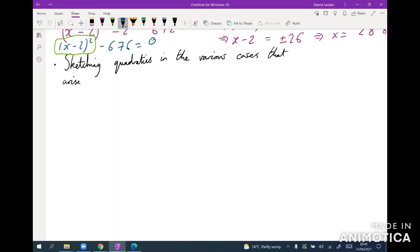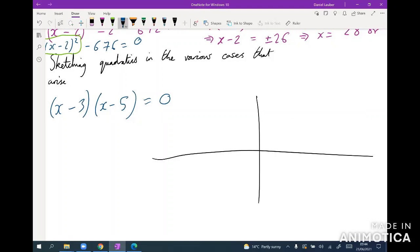And then the final thing to mention for quadratics is just make sure you're very comfortable with sketching them in the various cases. So the most important case is just when you've factorized already. Let's say it's x minus 3 times x minus 5 equals 0. Well, these are very easy to sketch. You just look at the values of x—so that tells us x equals 3 or x equals 5. So that's where the quadratic equals 0, and then you just sort of join them up as a little smiley face.